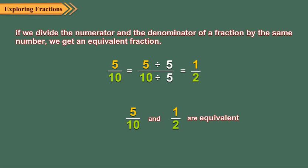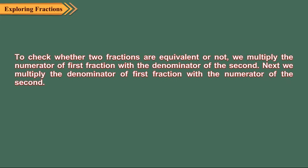If you are given two fractions, how will you check whether they are equivalent or not? To check whether two fractions are equivalent or not, we multiply the numerator of the first fraction with the denominator of the second. Next, we multiply the denominator of the first fraction with the numerator of the second. If the two products obtained are equal, it means they are equivalent; otherwise they are not equivalent.